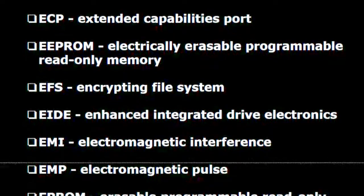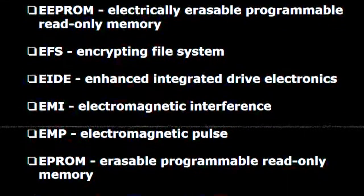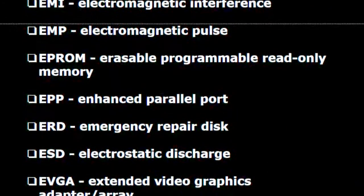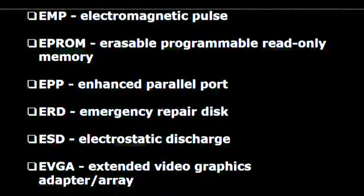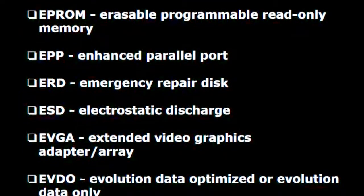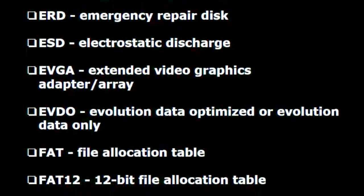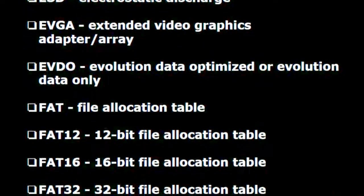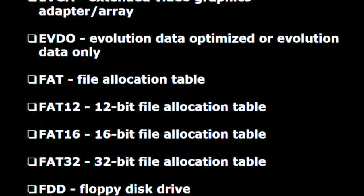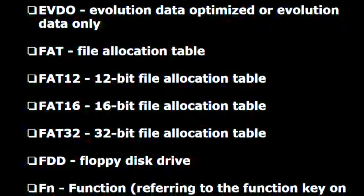E.I.D.E. — Enhanced integrated drive electronics. E.M.I. — Electromagnetic interference. E.M.P. — Electromagnetic pulse. EPROM — Erasable programmable read only memory. E.P.P. — Enhanced parallel port. E.R.D. — Emergency repair disk. E.S.D. — Electrostatic discharge. E.V.G.A. — Extended video graphics adapter array. E.V.D.O. — Evolution data optimized or evolution data only. F.A.T. — File allocation table. FAT12 — 12-bit file allocation table.